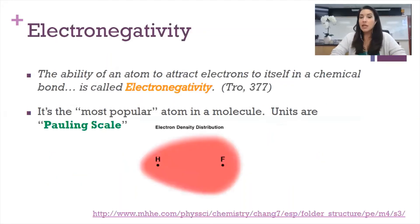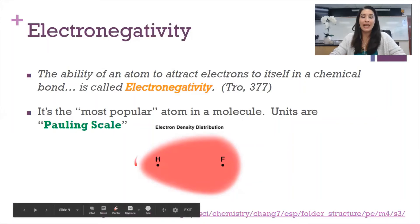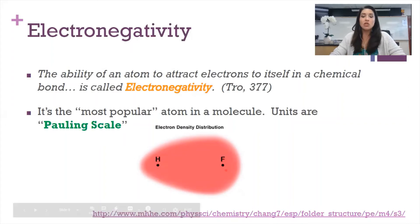The next trend I'd like to discuss is one called electronegativity. So electronegativity is defined as the ability of an atom to attract electrons to itself in a chemical bond. I always think of it like the most popular atom in a molecule. Here's a density distribution, right? So a cloud of where electrons are likely to be, similar to an orbital, and this represents a bond between hydrogen and fluorine. So we think about which of these elements is going to want to attract electrons more to itself.